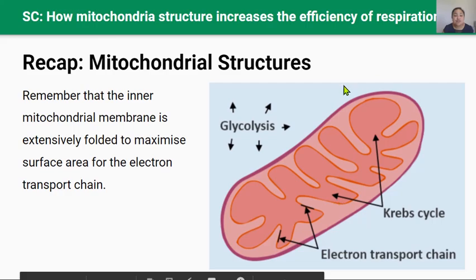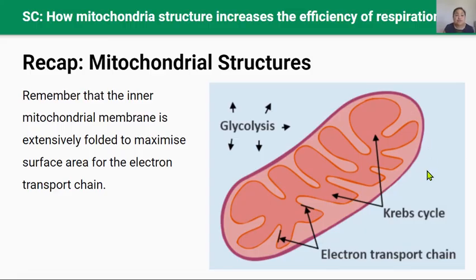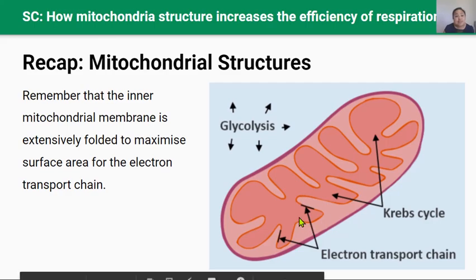Here's a recap of the structure of the mitochondria. The outer membrane is smooth and continuous, acting as a selective barrier responsible for transporting materials in and out of the organelle. The inner membrane is highly folded into structures called cristae, and this membrane is the site of the electron transport chain. The electron transport chain is so important because it makes the majority of ATP molecules during respiration. The presence of cristae increases the surface area so that the electron transport chain can maximize ATP production.